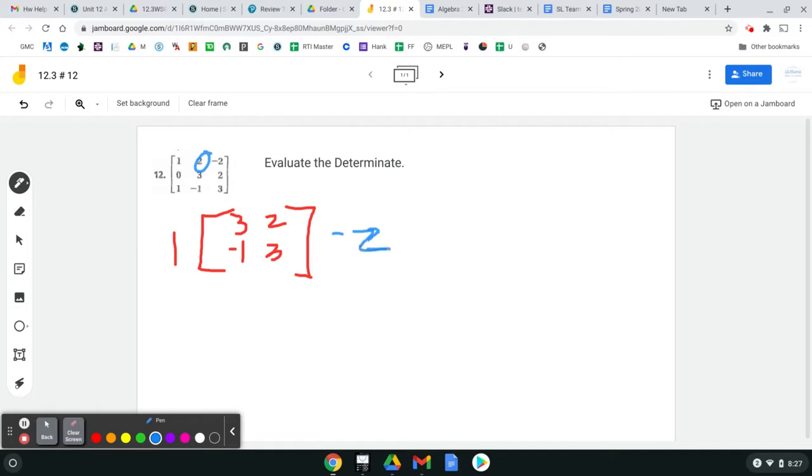So minus two times, cross those out, cross those out. So you got zero, one, two, and three. And then this one,